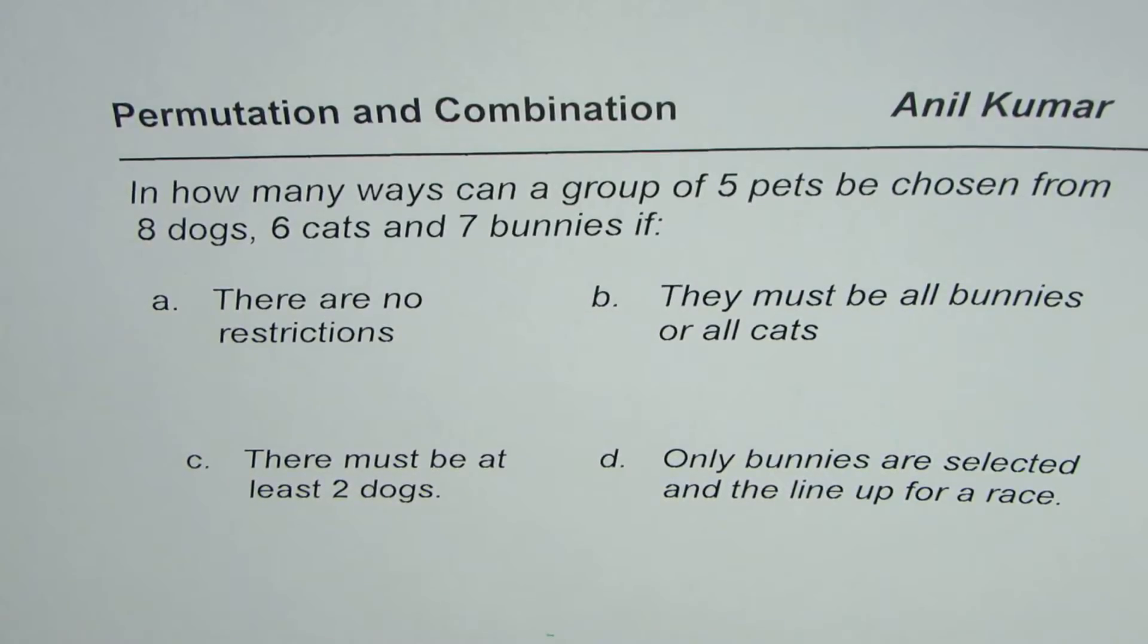I'm Anil Kumar and here is a question on permutation and combination which will help you understand all the concepts. In how many ways can a group of 5 pets be chosen from 8 dogs, 6 cats, and 7 bunnies